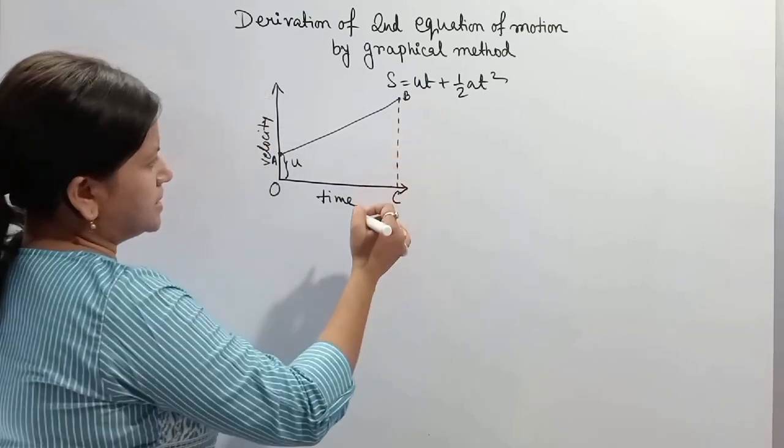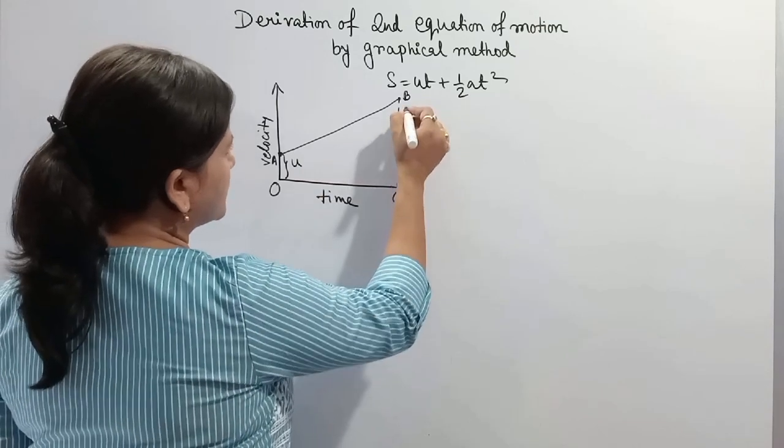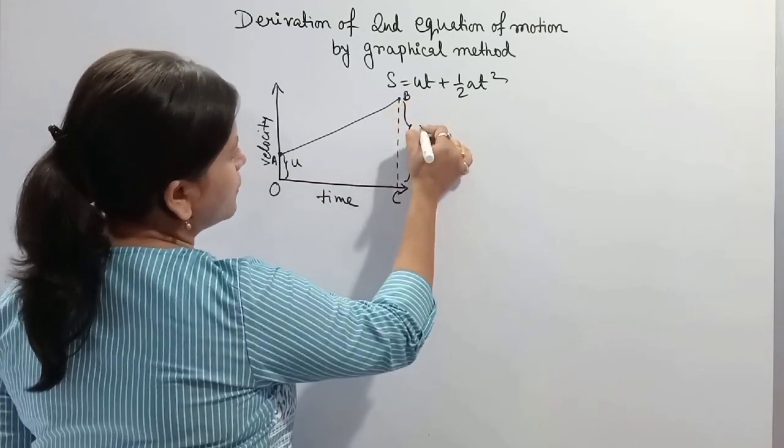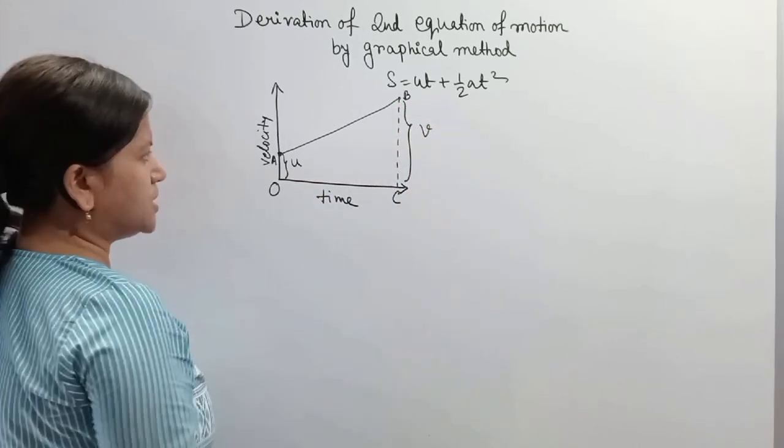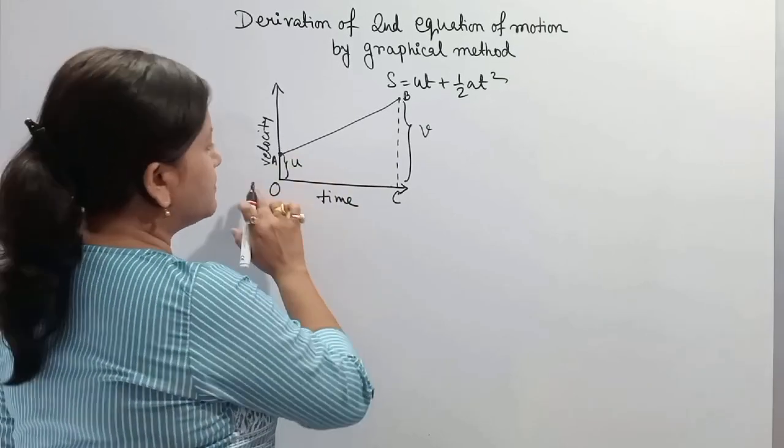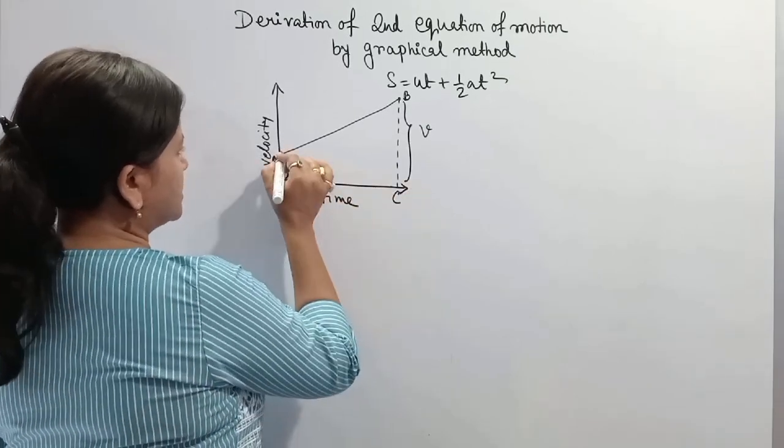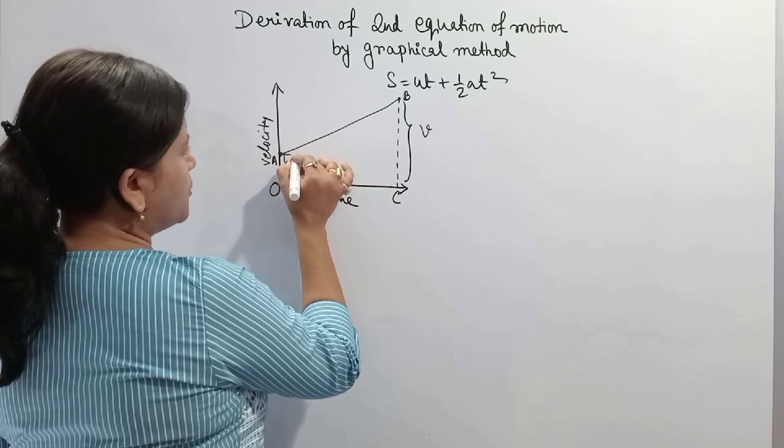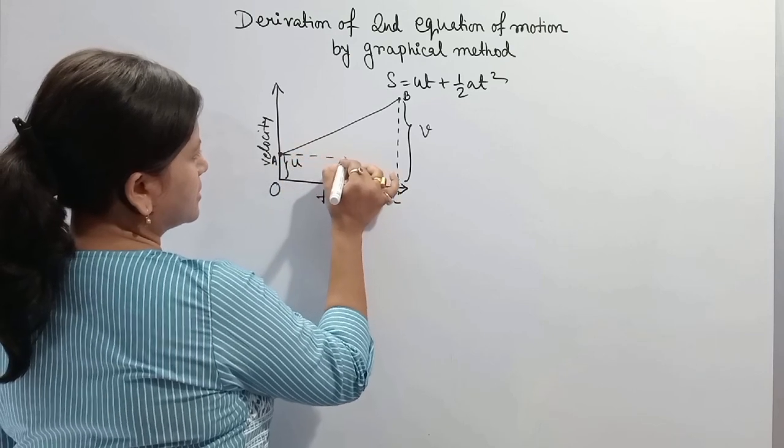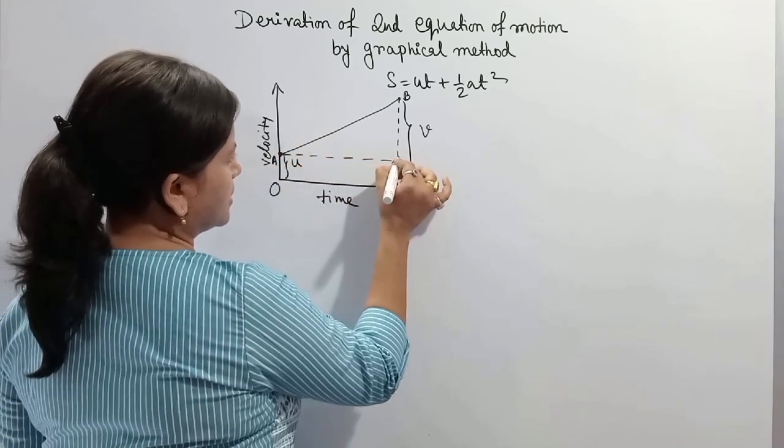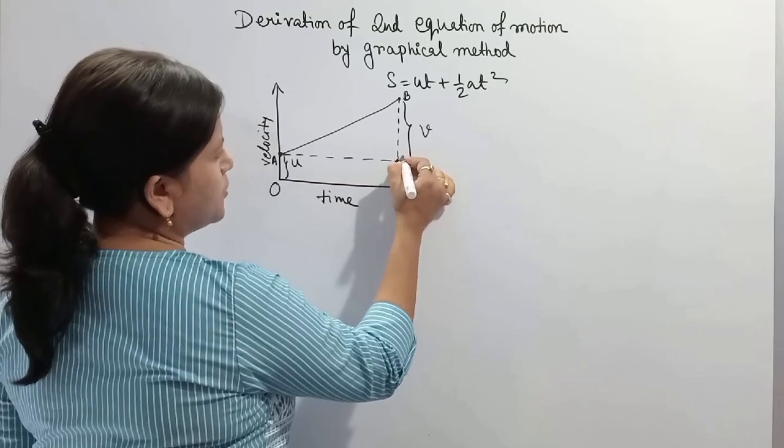Now draw a perpendicular from point B. So BC, this BC is final velocity v. Now draw a parallel line to OC from point A, and this intersecting point is D.